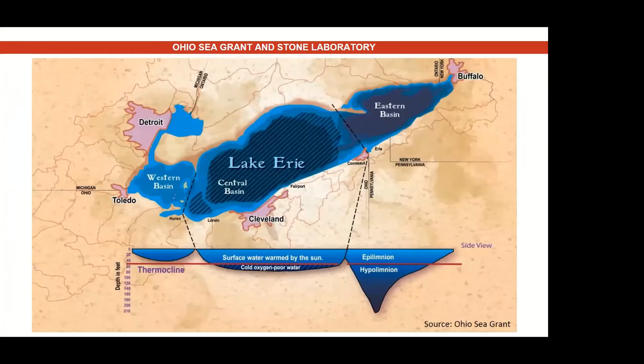Lake Erie has three regions or basins: the western basin, the central basin, and the eastern basin. Together, these basins cover the shoreline of Ohio from Toledo to Conneaut and all the cities in between.